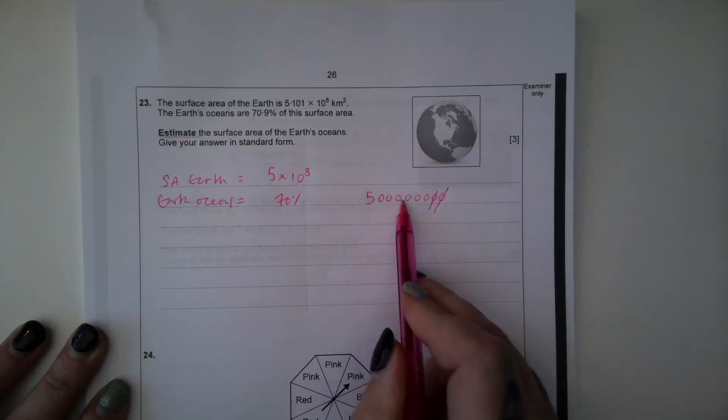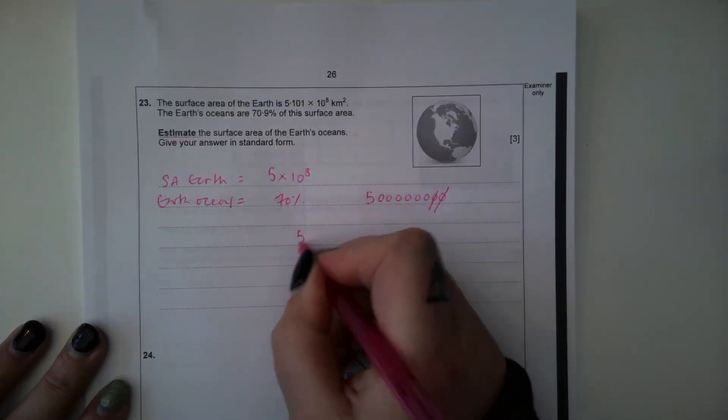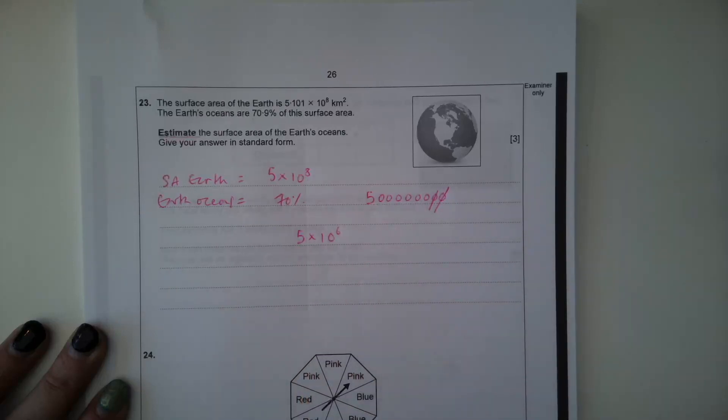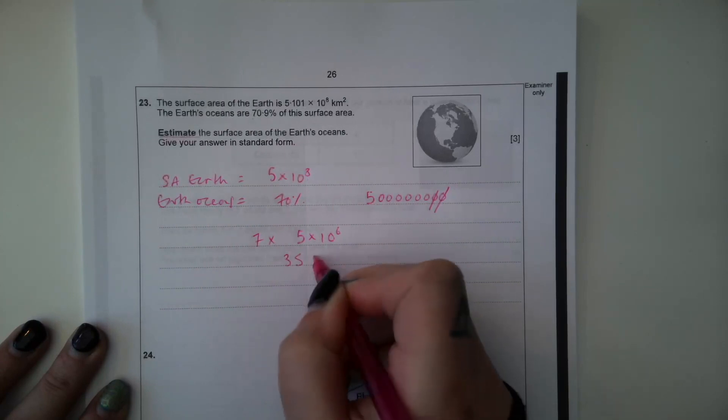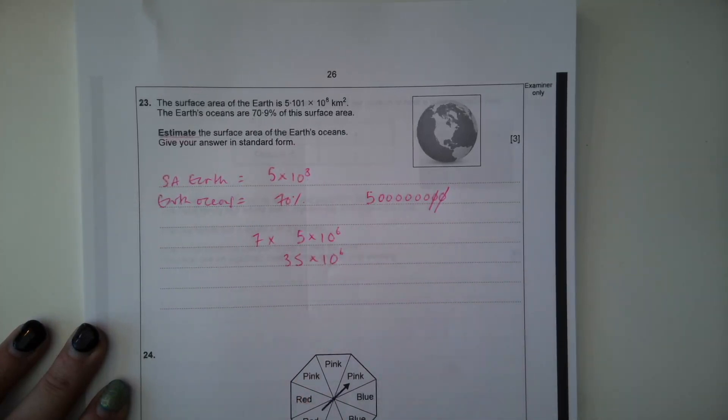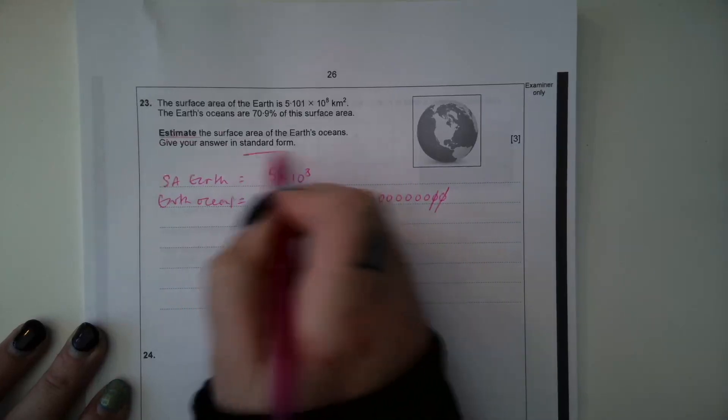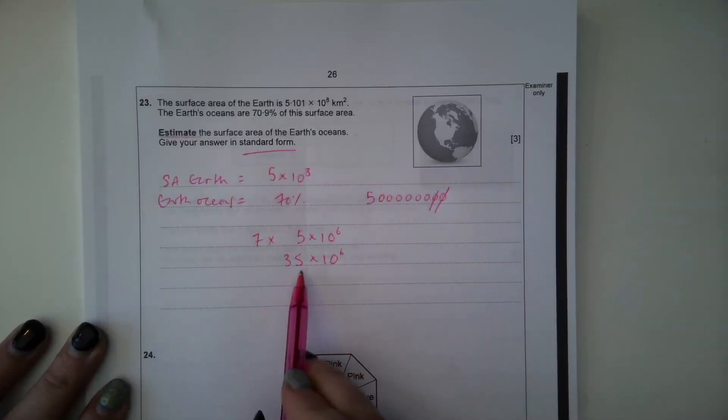So if we divide this by 100, 1, 2, 3, 4, 5, 6. We have 5 times 10 to the power of 6, but then we're going to multiply this by 7, which becomes 35 times 10 to the power of 6.